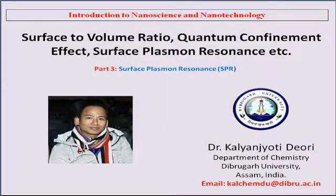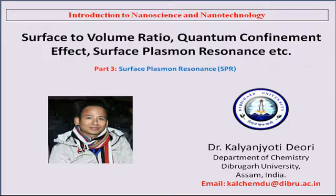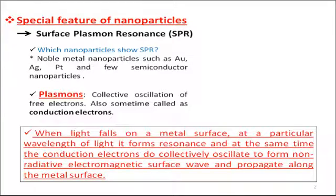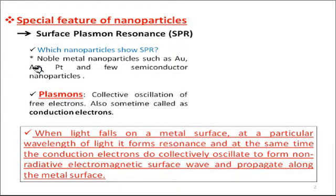Today I am going to discuss another special feature of some specific nanoparticles — surface plasmon resonance, or SPR. The word 'specific' means this phenomenon does not apply to all nanoparticles. Only particular types can show surface plasmon resonance, basically the noble metal nanoparticles such as gold, silver, and platinum, and only a few semiconductor nanoparticles.